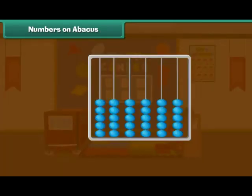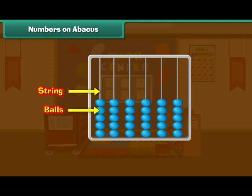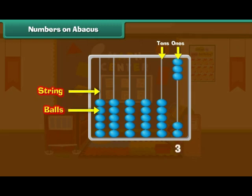Numbers on abacus. We can use an abacus for counting. This is an abacus — it has many strings and each string has many balls. We use the rightmost string to count ones, and the next string to count tens. This abacus has three balls in the ones string and two balls in the tens string. So the number is 23.